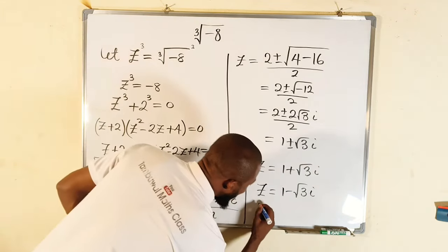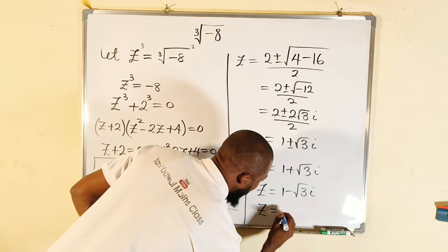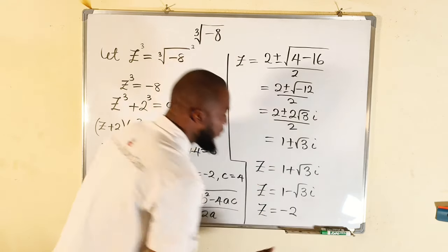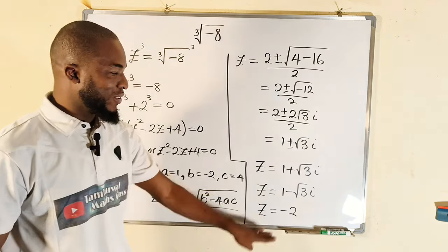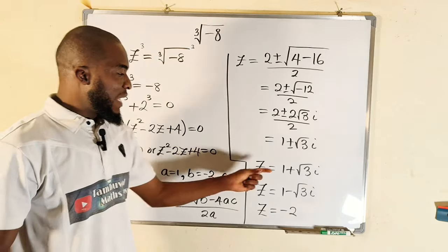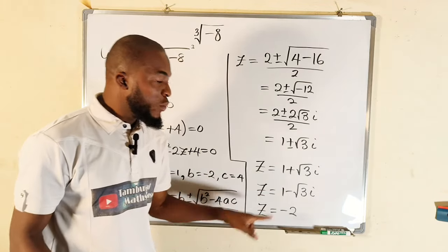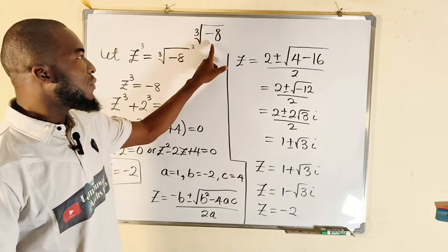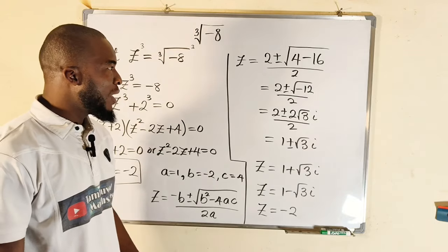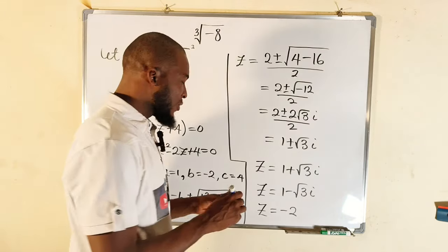Combined with z = −2 from before, we have three solutions for the cube root. Each value raised to the power of three must give you negative eight — you can verify this. Now let me show you another way to solve this problem, which is easier and faster.